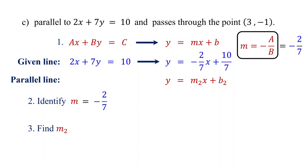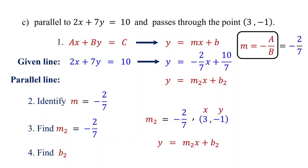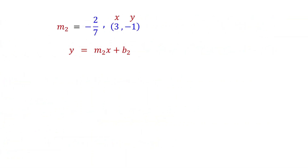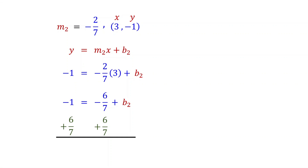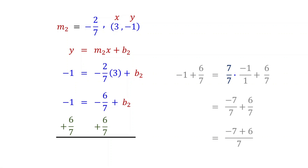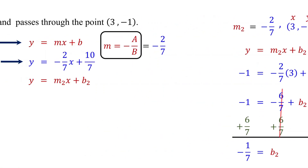Next, find the slope of the parallel line. Since parallel lines have the same slope, m2 also equals negative 2 sevenths. Next, find the y-intercept of the parallel line using its slope and the given point. Substitute the values of m2, x, and y into y equals m2x plus b2. Replace y with negative 1, m2 with negative 2 sevenths, and x with 3. Now solve for b2. Negative 2 sevenths times 3 is negative 6 sevenths. Then add 6 sevenths to both sides to isolate b2. On the left, rewrite negative 1 as negative 1 over 1, then multiply by 7 over 7 to get a common denominator. Now add the numerators, giving negative 1 sevenths. On the right, these cancel, leaving b2. Therefore, b2 equals negative 1 sevenths.